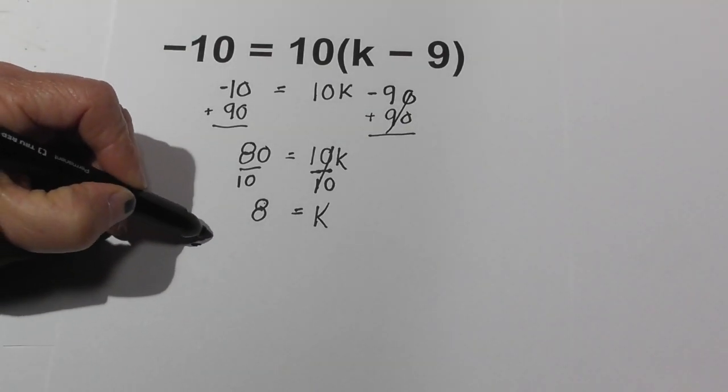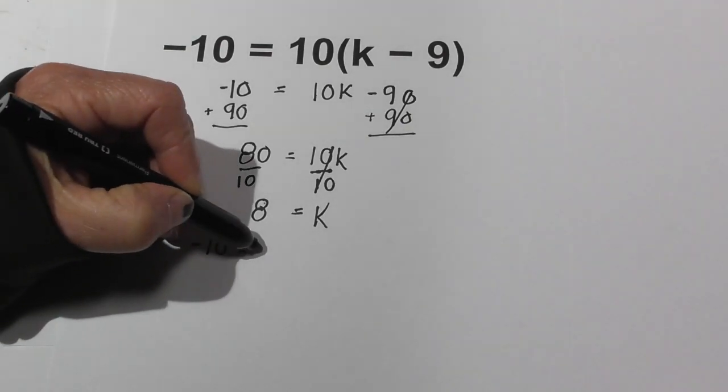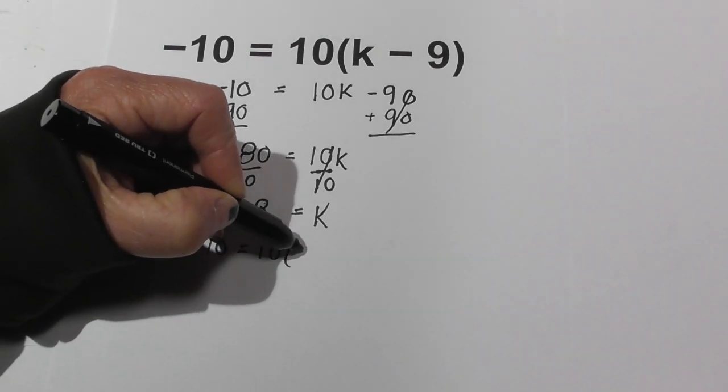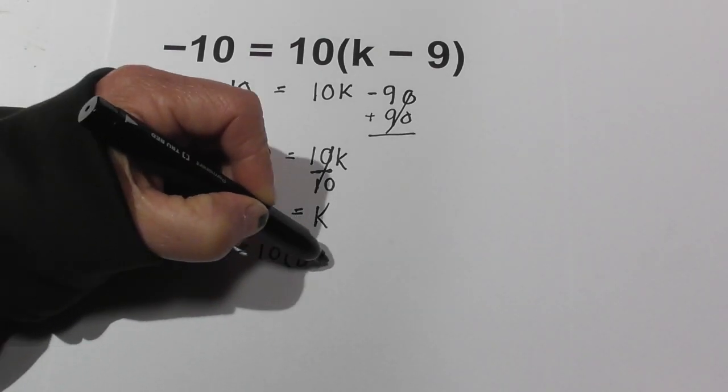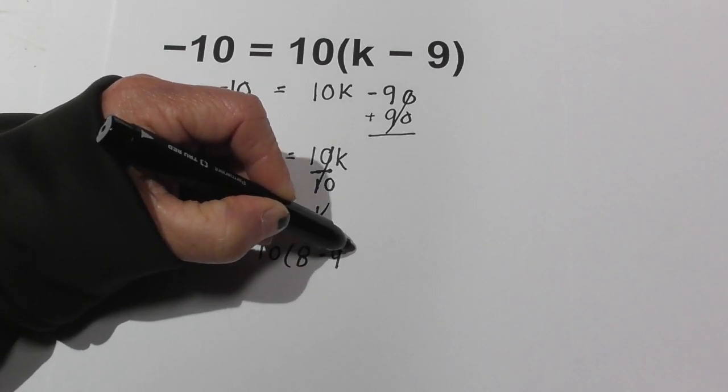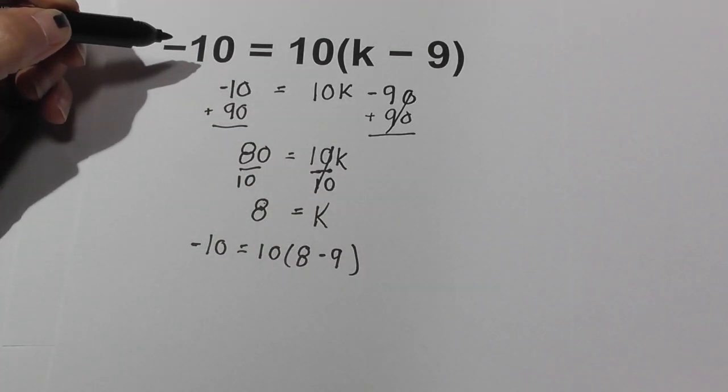Now let's plug it into our original equation. Instead of k, I'm going to put 8: -10 = 10(8 - 9).